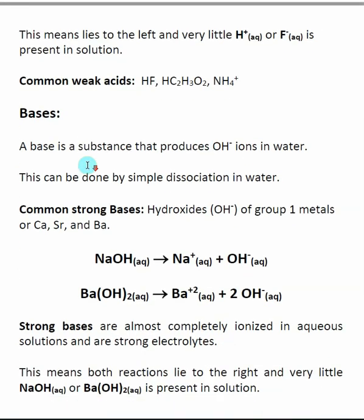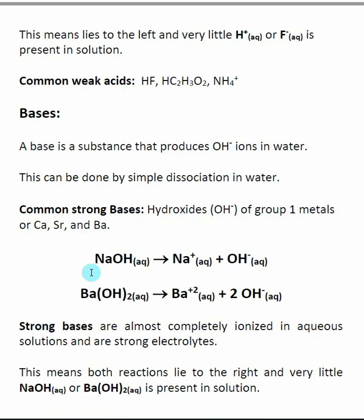The same thing goes for bases. The simplest definition of a base is a substance that produces OH⁻ ions in water. There are two different ways we can make hydroxide ions in water. The first is simple dissociation — for a strong base, typically these are going to be hydroxides of group 1 metals or certain group 2 metals. With a strong base, you actually see the hydroxide as part of the compound, so it makes sense that when put into water it dissociates and forms hydroxide as one of its ions.